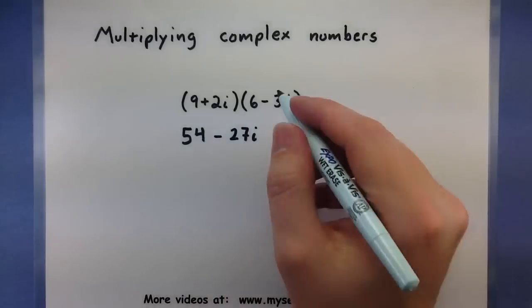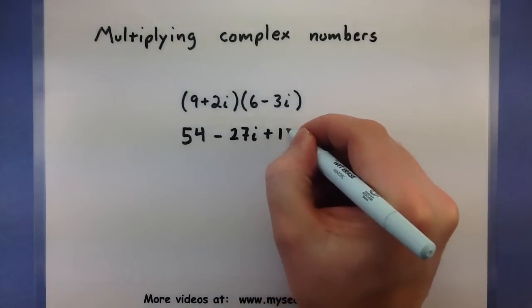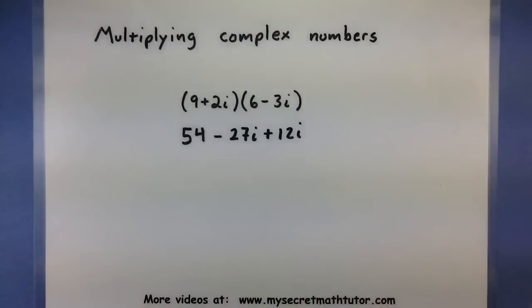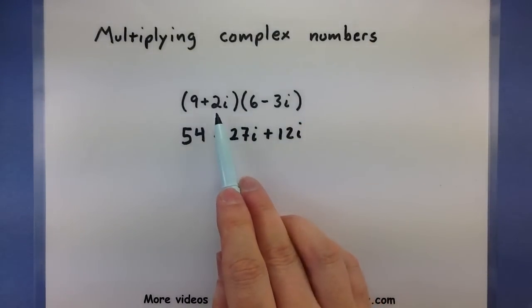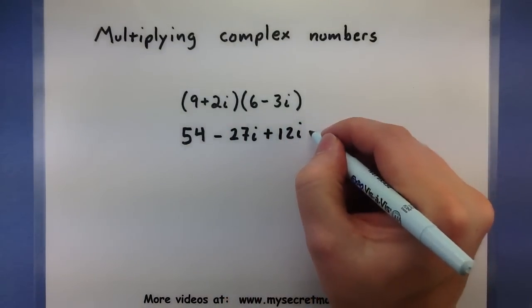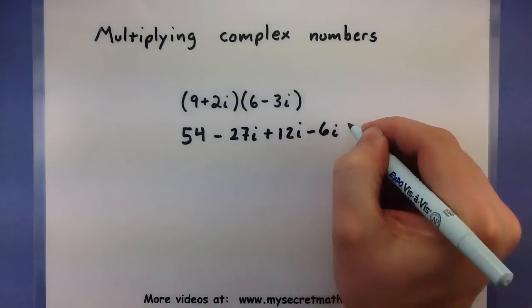Now 2i times 6, or plus 12i. Now my last terms, 2i multiplied by negative 3i, negative 6i squared.